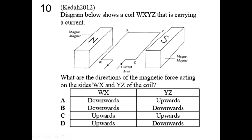Question 10: the diagram shows a coil WXYZ carrying current. What is the direction of the magnetic force — the catapult force — acting on side WX and side YZ? I will let you write your answer in the comment below. Please comment your answer.